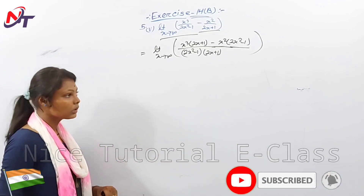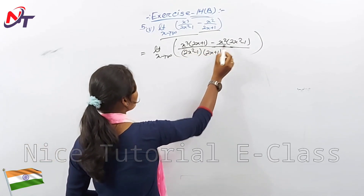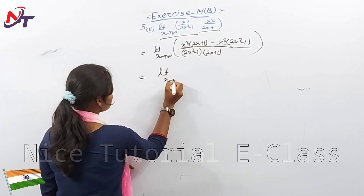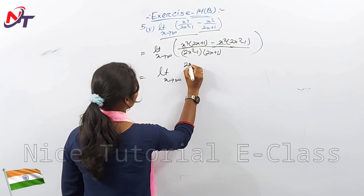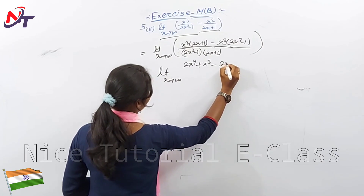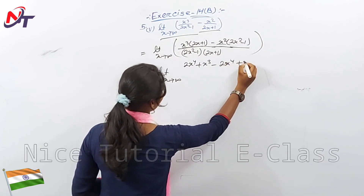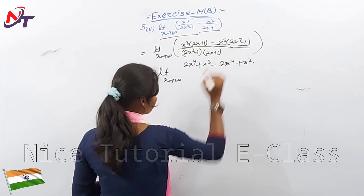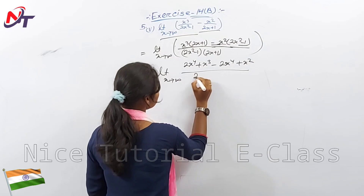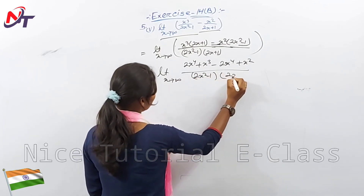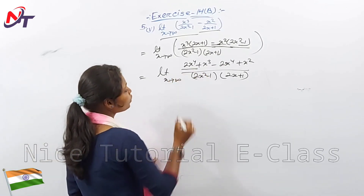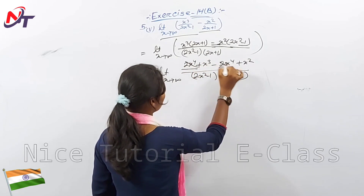The denominator is (2x² minus 1) into (2x plus 1). Now multiply out: x³ times (2x plus 1) gives 2x⁴ plus x³. Then x² times (2x² minus 1) gives 2x⁴ minus x². So the numerator has 2x⁴ plus x³ minus 2x⁴ plus x². The 2x⁴ terms cancel.